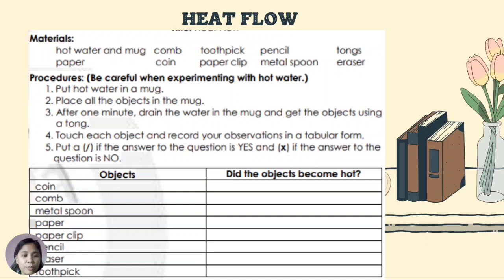Procedure — be careful when experimenting with hot water. Number one: put hot water in a mug. Two: place all the objects in the mug. Number three: after one minute, drain the water in the mug and get the objects using tongs. Number four: touch each object and record your observations in tabular form. Put a check if the answer to the question is yes, and an X if the answer is no. Objects include: coin, comb, metal spoon, paper, paper clip, pencil, eraser, and toothpick. Did the objects become hot?